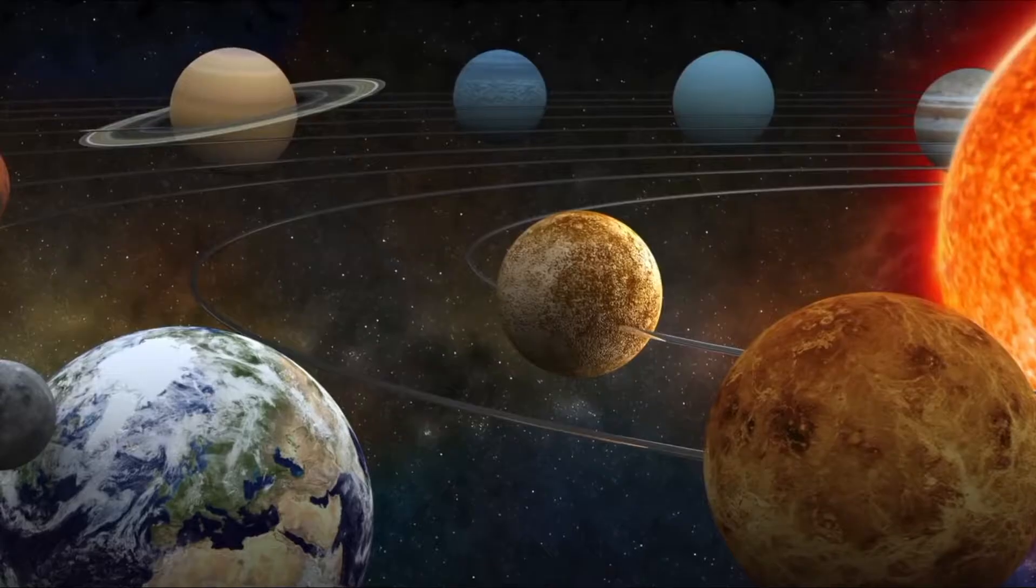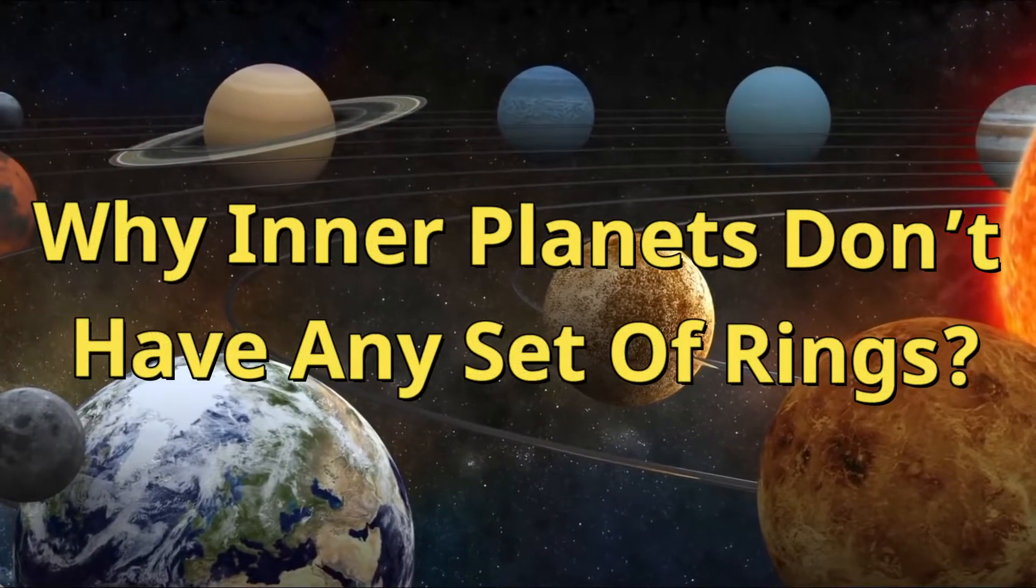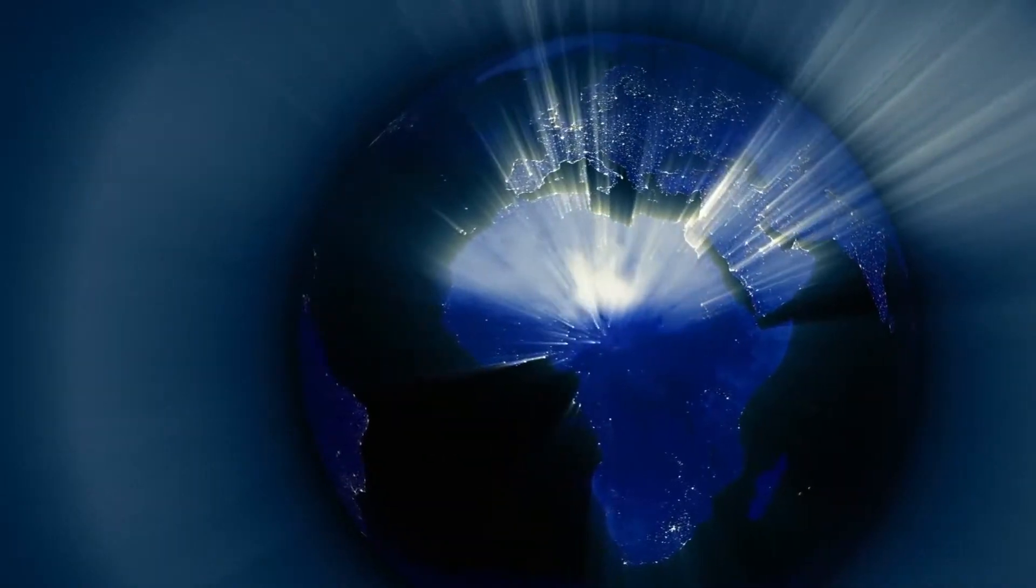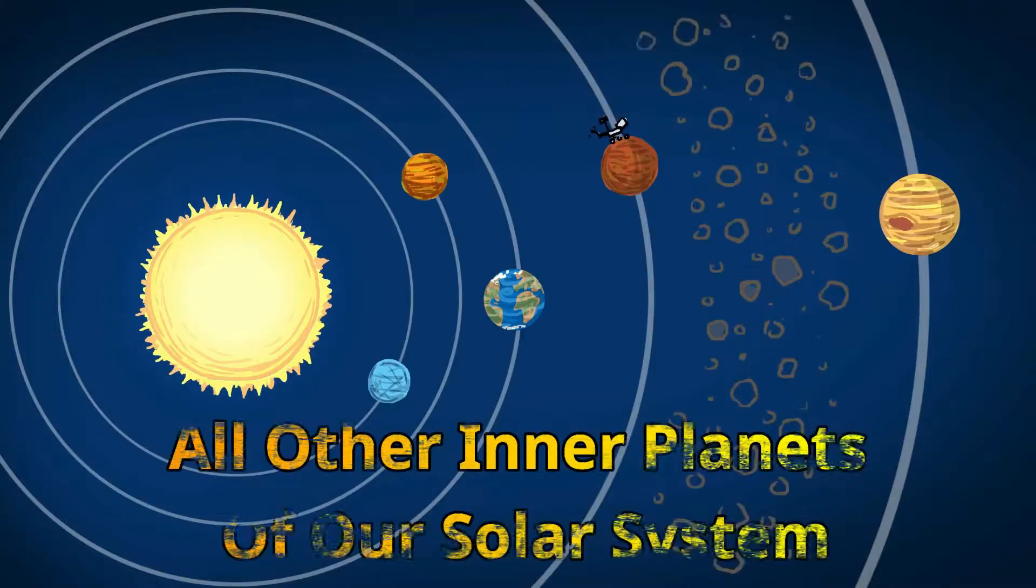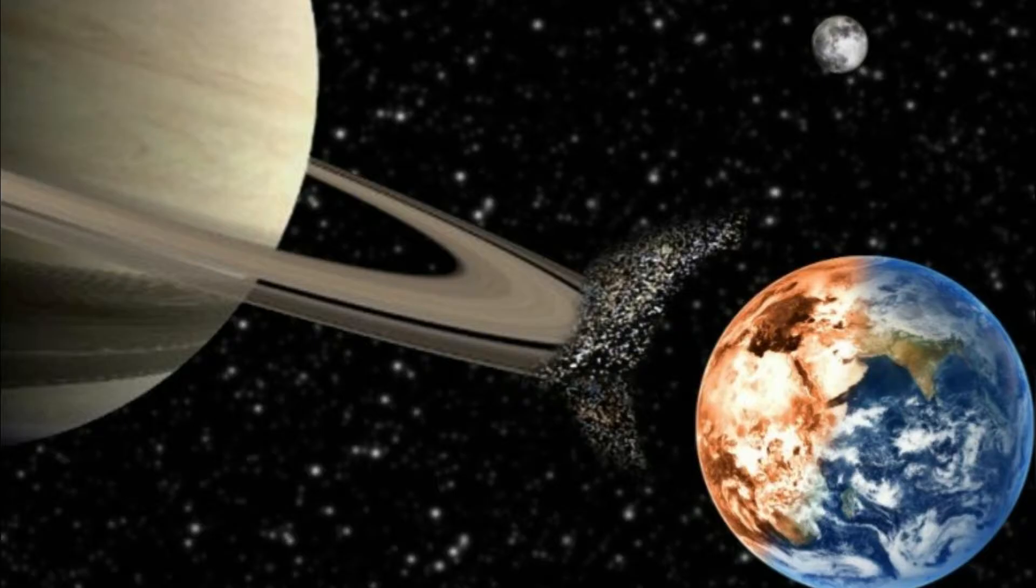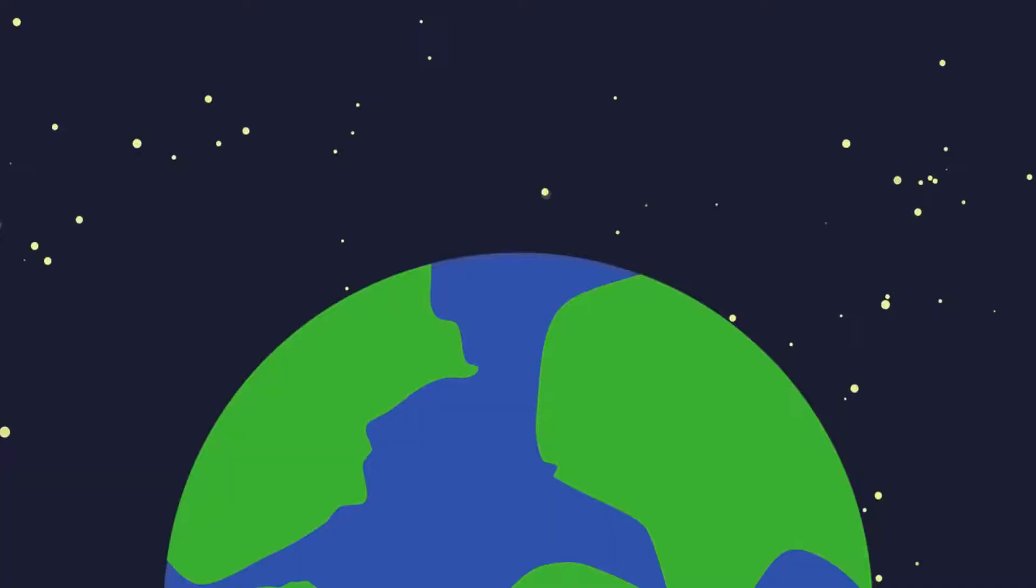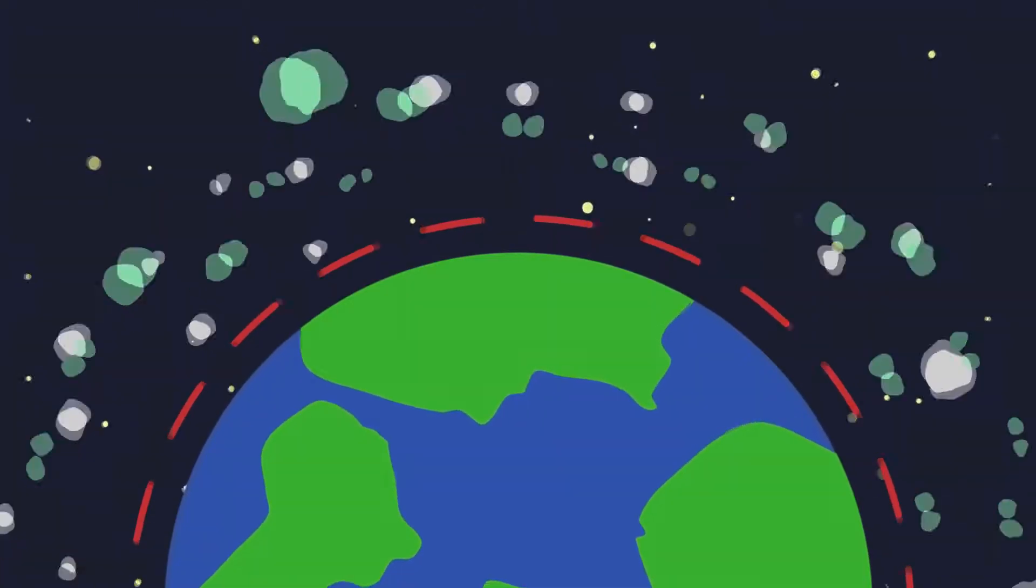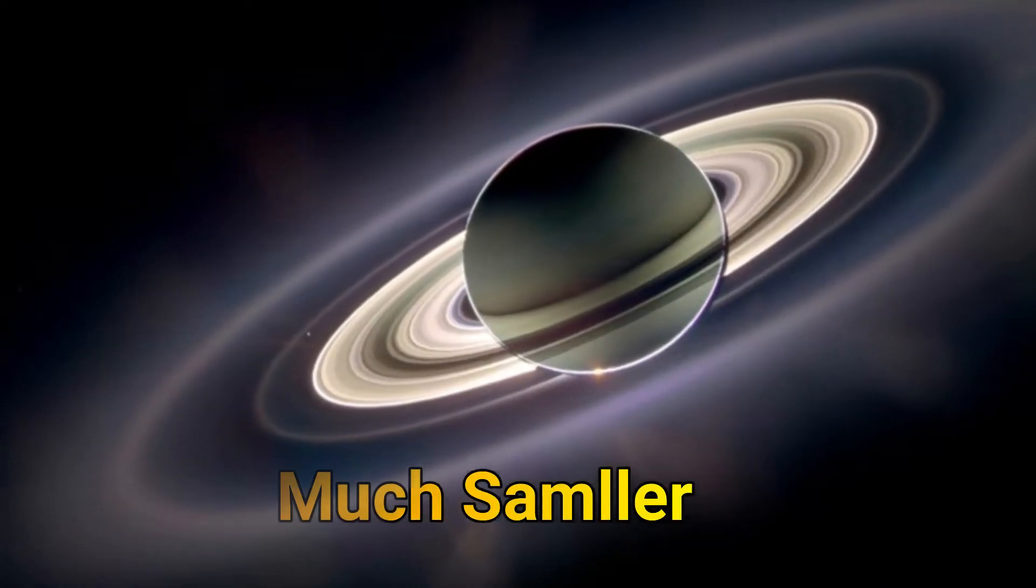This leads us to the second question: in our solar system, why don't inner planets have any set of rings? Let's talk about Earth first. The answer will apply to all other inner planets of our solar system. Since Earth is way smaller than Saturn, the region around Earth where an object can fall in to break up into rings is much smaller than the region for Saturn.